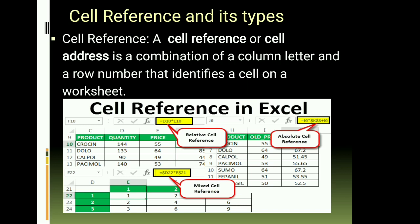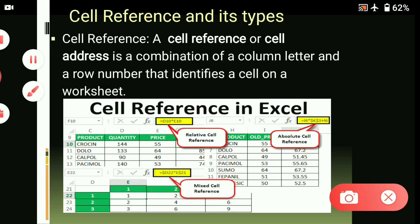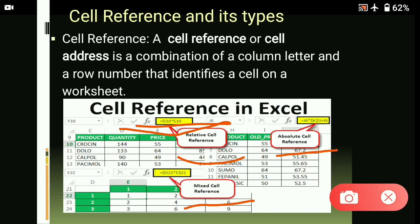The next heading is cell reference and its types. A cell reference or cell address is a combination of a column letter and a row number that identifies a cell on a worksheet. Cell references are of three types: relative cell reference, absolute cell reference, and mixed cell reference. Relative cell reference is a normal cell address. As you can see in the formula bar, there is a formula like equal to D10 multiplied by E10. Once you copy this formula and paste it into another cell, the cell references will automatically change — this is the feature of relative cell reference.